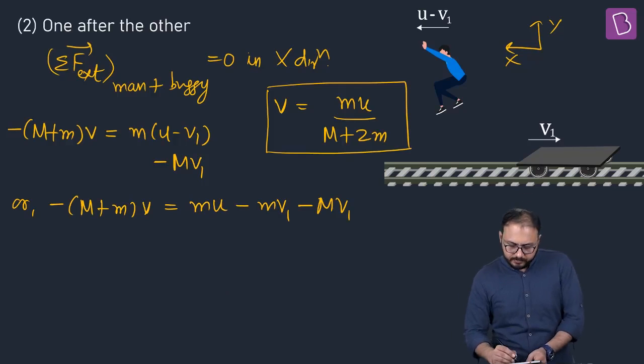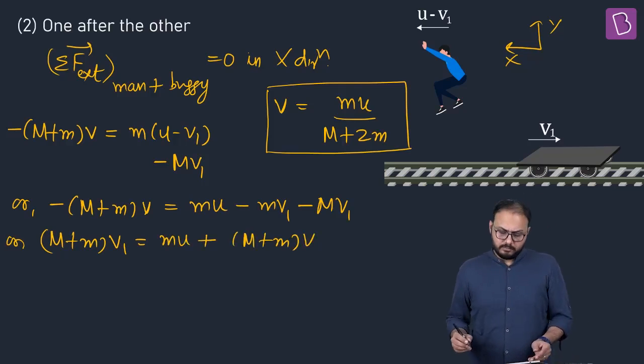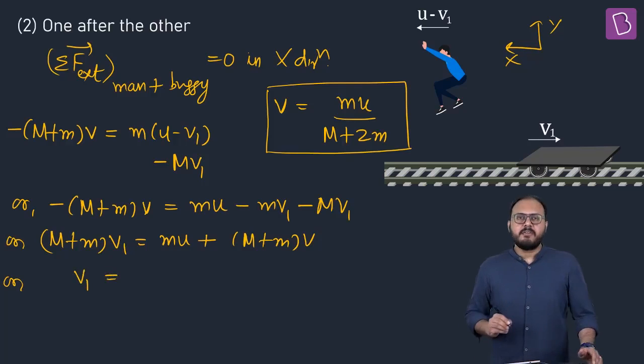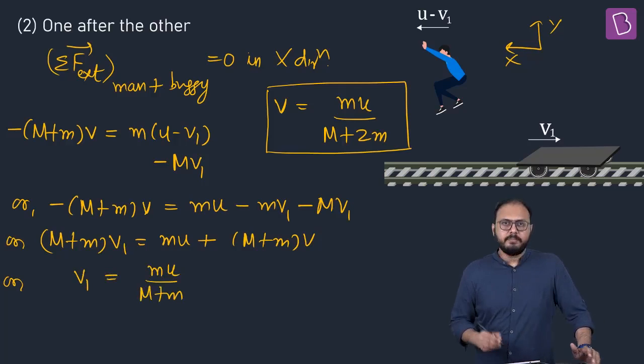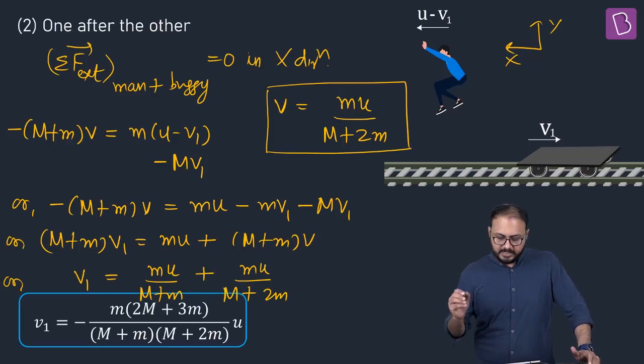If you switch, M plus M V1 comes this side. And MU plus M plus M V comes this side. Not bad. Or, divide now. V1 is equal to MU, M plus M divide, plus V. And what is V equal to? MU upon M plus 2M. What is the answer? You know, they have taken the LCM. I will not. That is the answer for me.